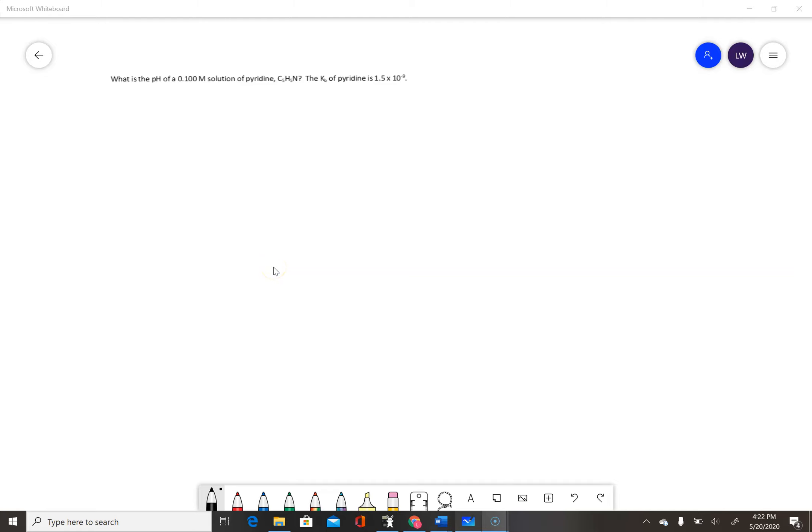This problem asks us to solve for the pH of a 0.1 mole per liter solution of pyridine given its Kb. Pyridine is a weak base, so we're expecting a pH greater than 7. We need to set up a Kb ice table.